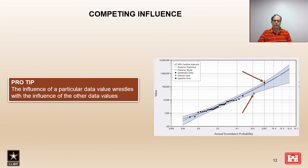Sometimes different data values will try to influence the frequency curve in opposite directions. In this example we see a lower flow value effectively wanting to pull the curve downward and a higher flow value effectively wanting to pull the curve upward. The influence of these two values competes, but in the math used to fit the frequency curves this competition is sorted out so that each data value's influence is appropriate. The fitted frequency curve ends up falling in between these two values, perhaps a bit closer to the upper value, possibly because it has more influence and is more consistent with the rest of the data.